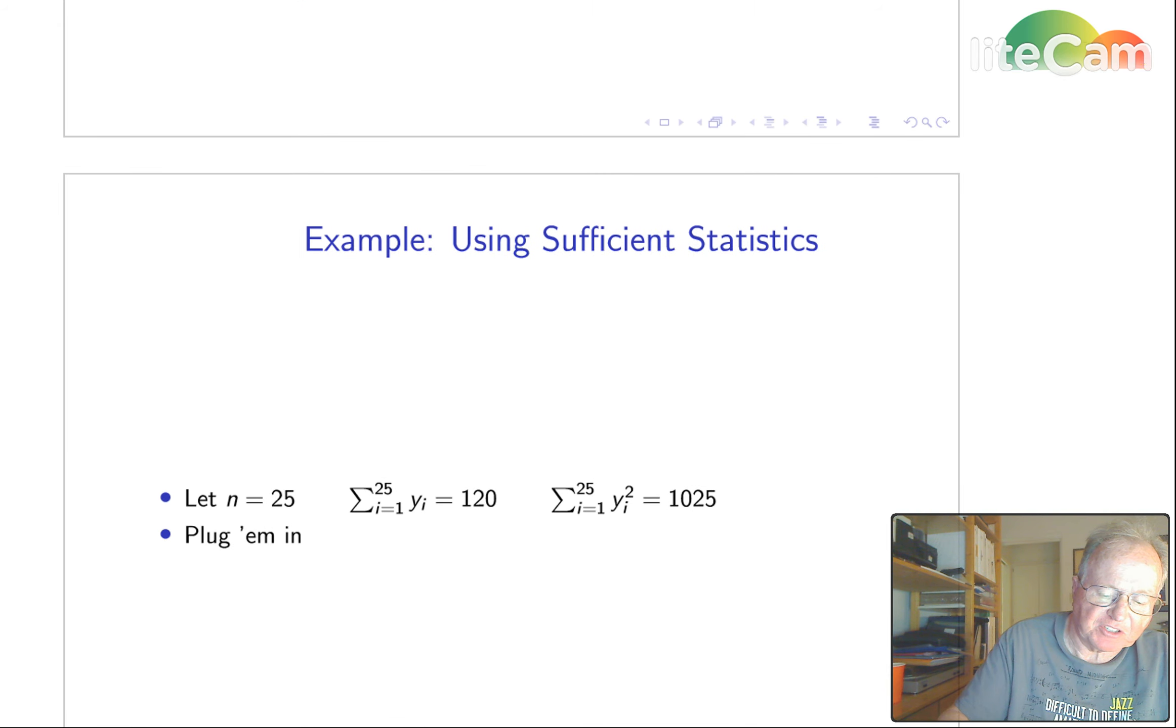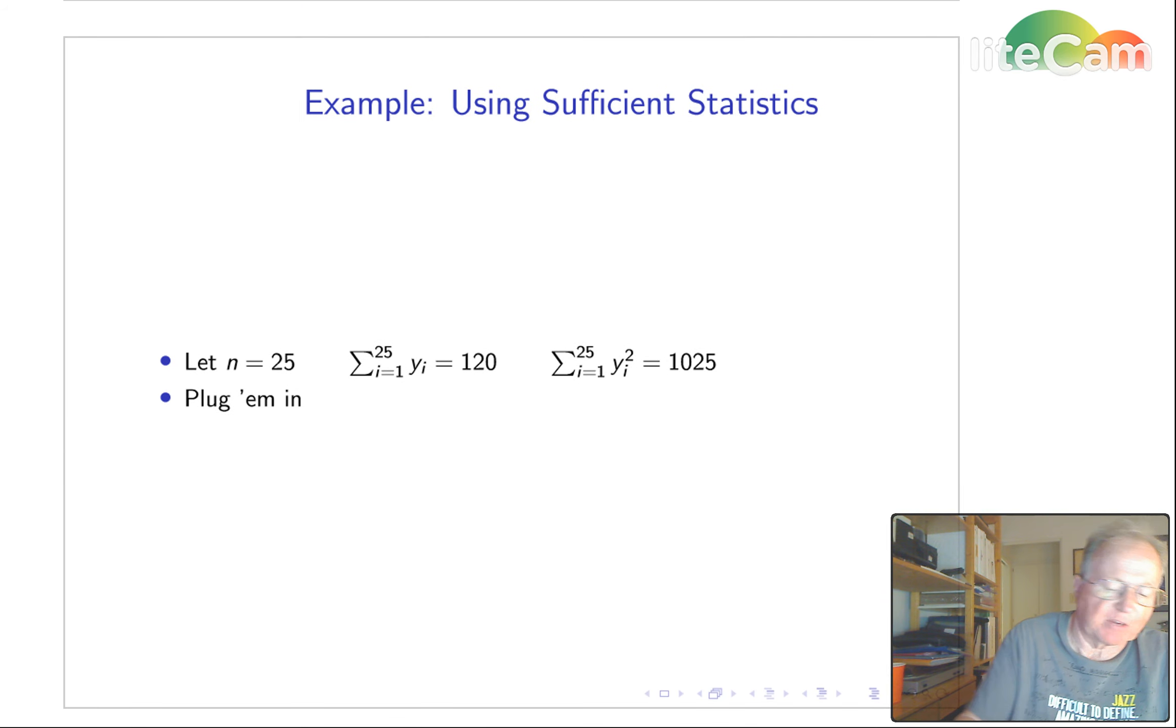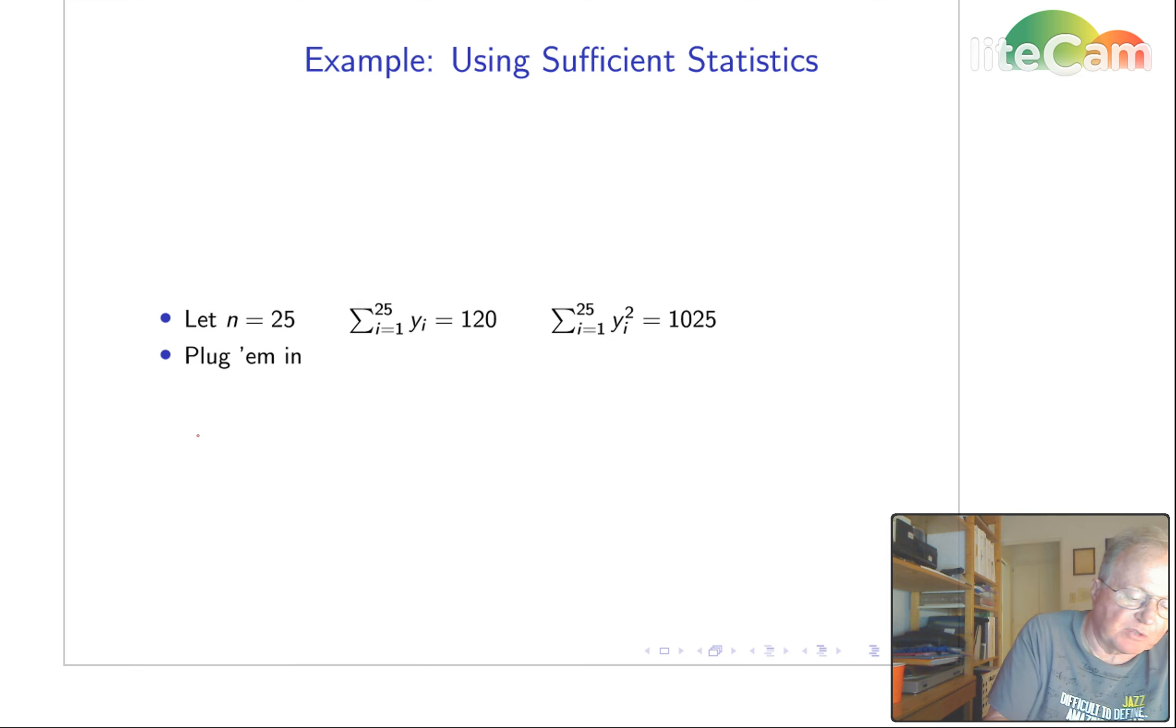How about using sufficient statistics? Here they've already been calculated for us, so all we have to do is plug them in. S squared, 1025 minus 120 squared over 25, divide by 25 minus 1, and again a bit of calculator work gives us 18.71.